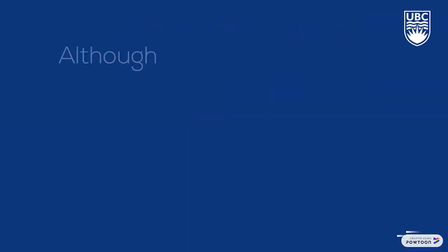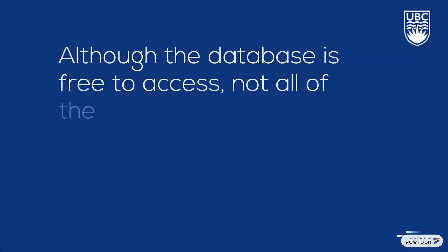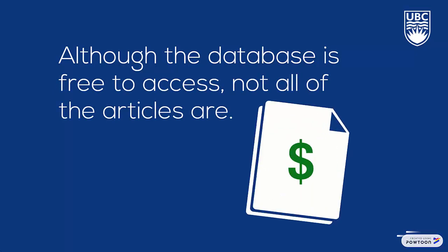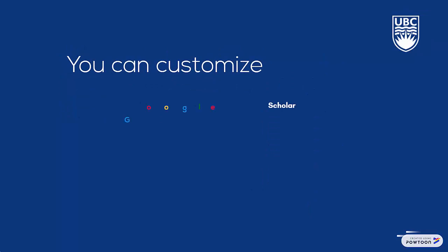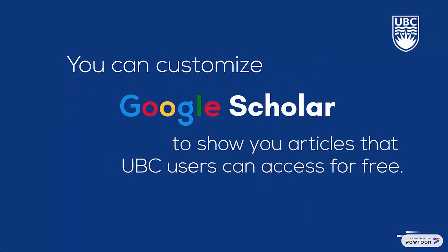Although the database is free to access, that doesn't actually mean that all of the articles are free for every user. Fortunately, Google Scholar has made it possible to customize your settings to a specific library, which means that when you search in Google Scholar, you can read any of the works that UBC has access to, as well as the articles from Google Scholar that are available for all users.